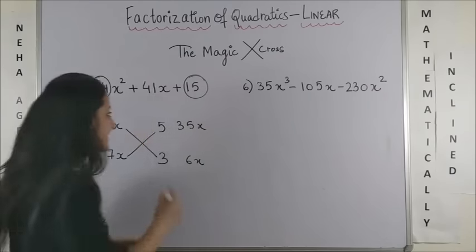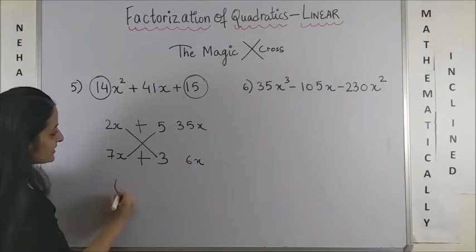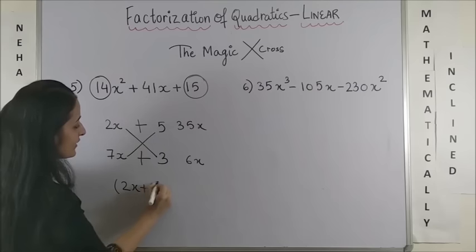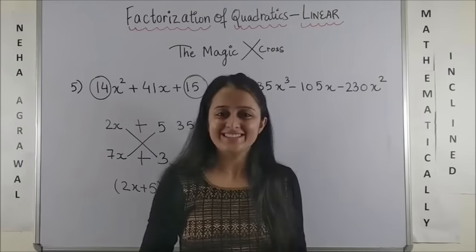I have cracked it and I need a positive sign so I know my factor would have plus. So, the answer is 2x plus 5 and 7x plus 3. Tell me it was very easy.